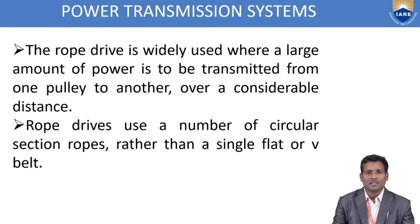Rope drives use a number of circular section ropes rather than a single flat or V-belt drive. In belt drives, flat belts have rectangular cross-section and V-belts have trapezoidal cross-section. But in rope drives, only one cross-section: circular cross-section.